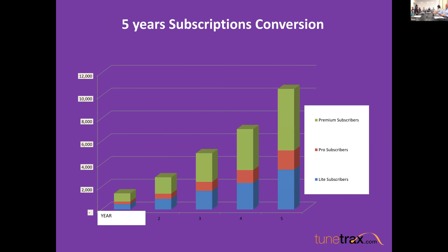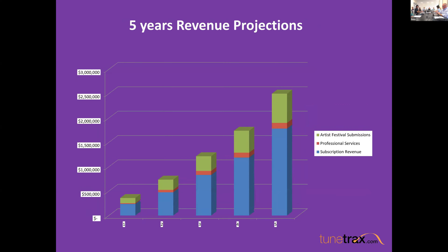This is a five-year subscription conversion. As you can see, the first year we have a little bit less than 2,000 paying subscribers, and by year five we're up to 10,000 subscribers. We have three tier subscriptions: a premium, a pro, and a light. For the five-year revenue projections, the first year we're going to be around $300,000 to $350,000, and by year five, $2.5 million.